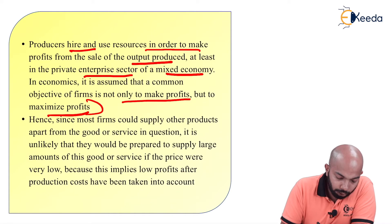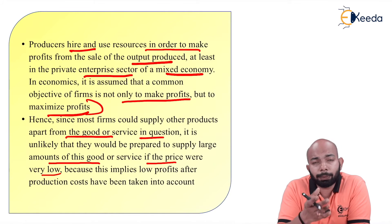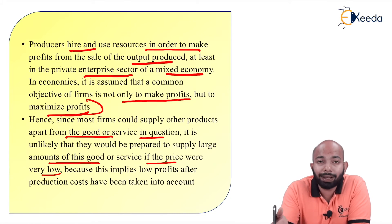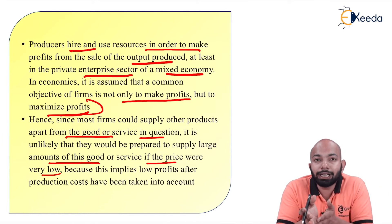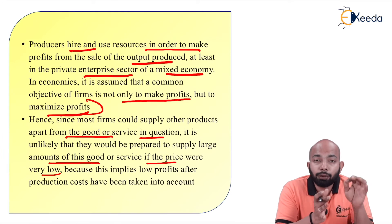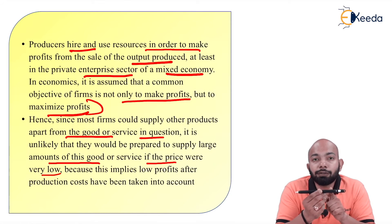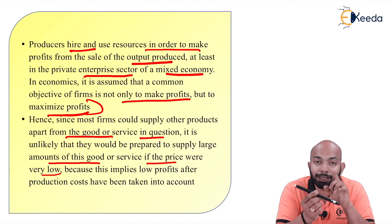Since most firms could supply other products apart from the goods or services in question, it is unlikely that they would be prepared to supply a large amount of goods and services if the prices were very low. If prices are going low, why would someone supply more or a larger quantity? If you are not even able to cover the break-even point, it doesn't make sense. Hence, at any given point of time, if you are not able to reach the break-even point, it doesn't make sense to supply so many goods because that cost is not yet covered.